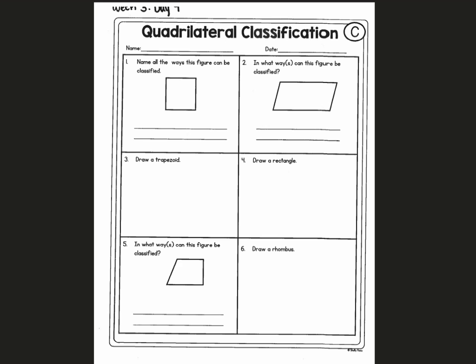For number one, I'm looking back to the first day of introductions to quadrilaterals and just working my way down the family tree. So the first shape is quadrilateral, and this does have four sides, so this is a quadrilateral.